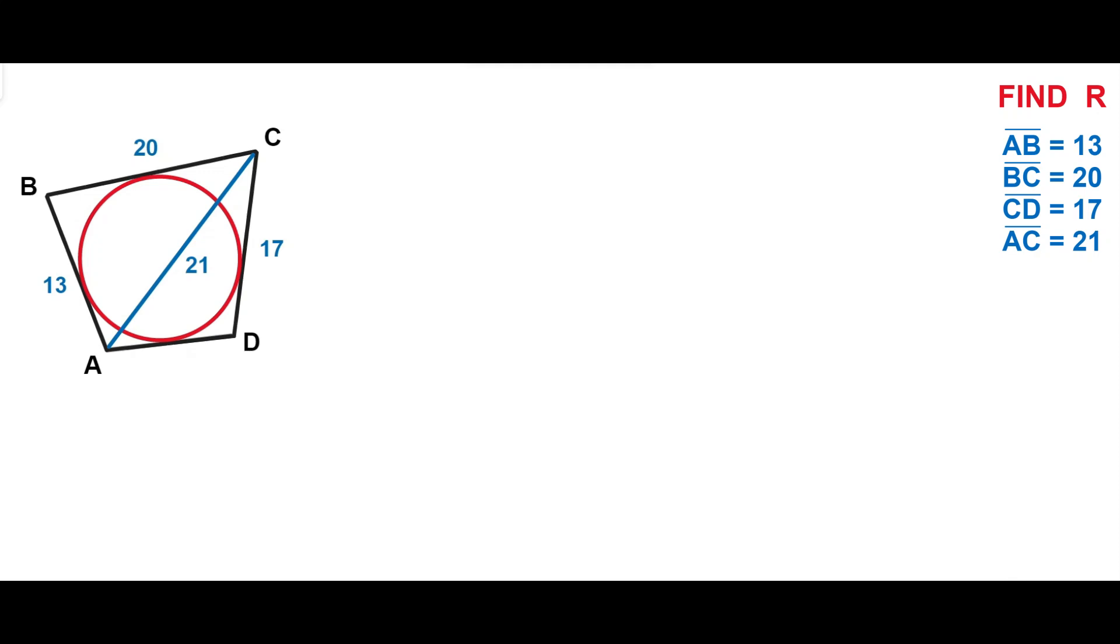Welcome to Geometry Masterclass. In this video we have a circle and circumscribed quadrilateral ABCD. The sides of the quadrilateral are AB = 13, BC = 20, CD = 17, and the diagonal AC = 21. The task is to find the radius of the inscribed circle.